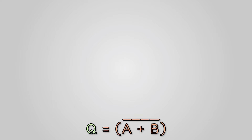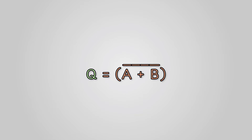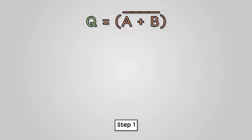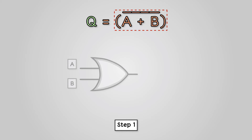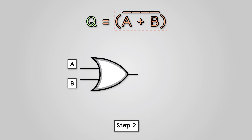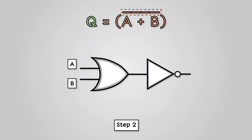Our next boolean expression is Q equals NOT(A OR B). Step 1: Start with the brackets — this is the A OR B part. Here we draw a simple OR gate with the two inputs A and B. Step 2: Add the outer expression — this is the NOT part. Here the result of A OR B is then NOTted. And now our logic circuit is complete.